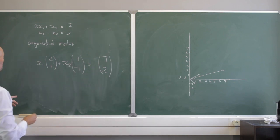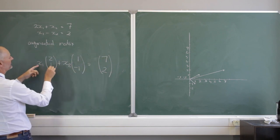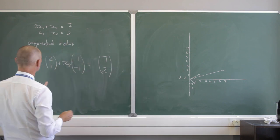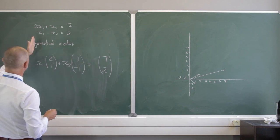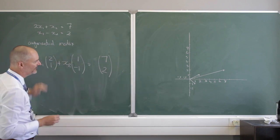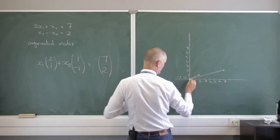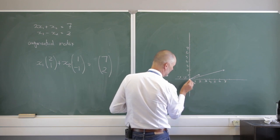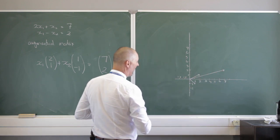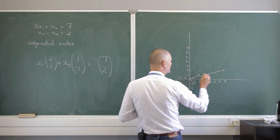Yes, because I want 2 times x1 plus x2 to give me 7, and I want x1 minus x2 to give me 2. I want to see all of this as column vectors. In the two-dimensional plane, the vector 2 comma 1 is here and 1 comma negative 1 is there. My solution vector is 7, 2, and I'm asking how many times this vector added to how many times that vector will give me that vector.